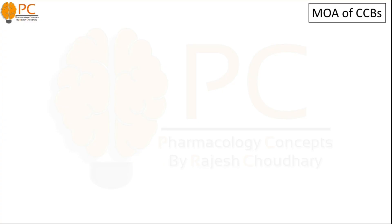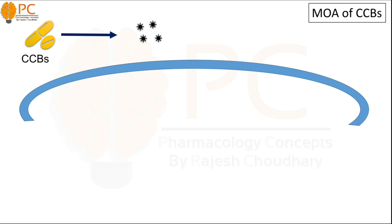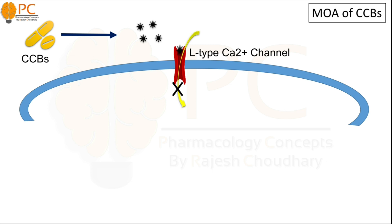Calcium channel blockers like nifedipine, amlodipine, felodipine, diltiazem, and verapamil mainly block the L-type calcium ion channel, which are present on cardiac and blood vessel cells, and they inhibit the entry of calcium ions into the cells.